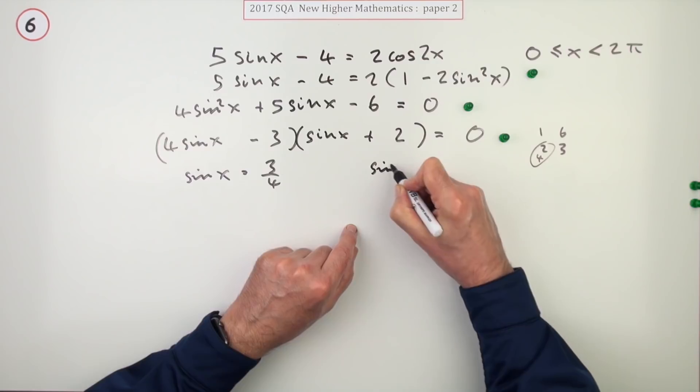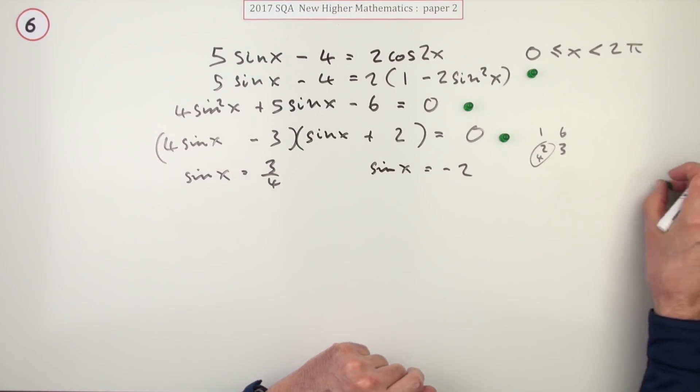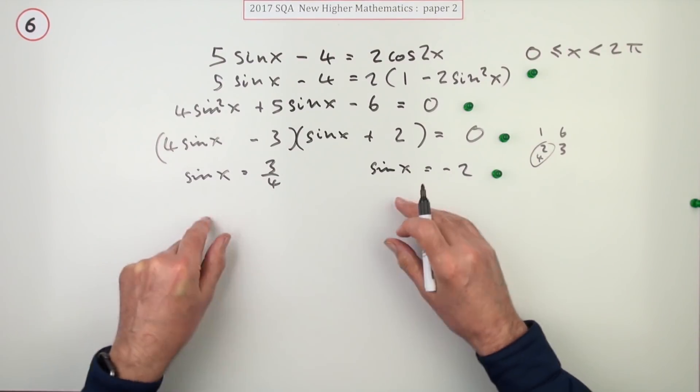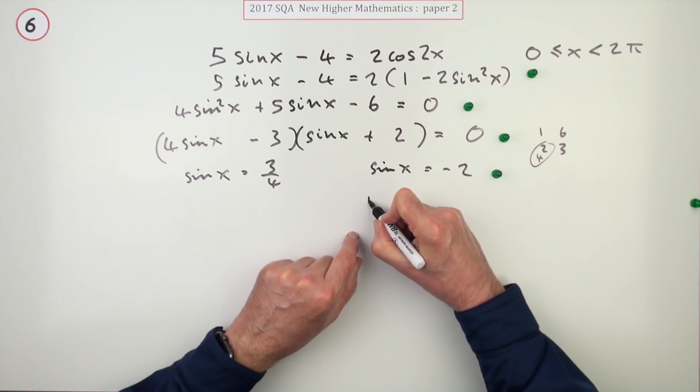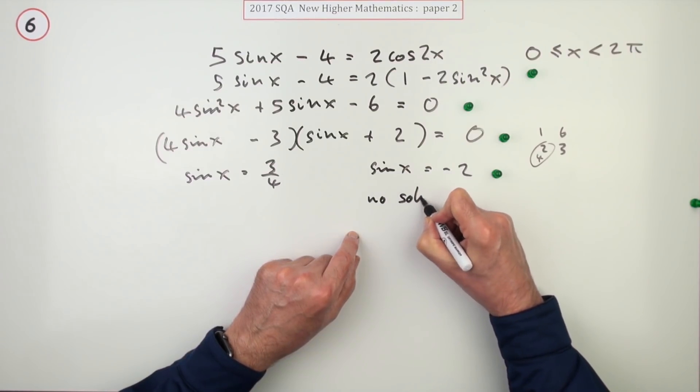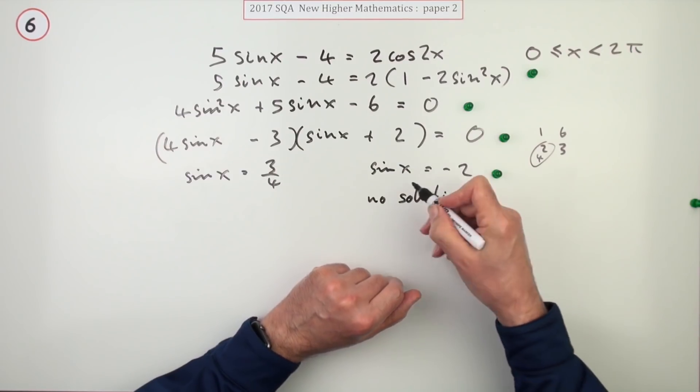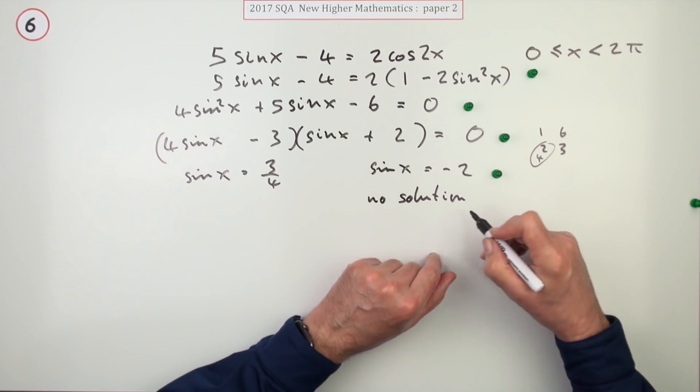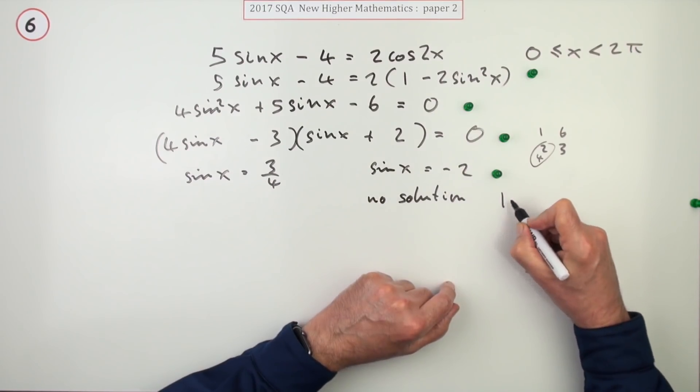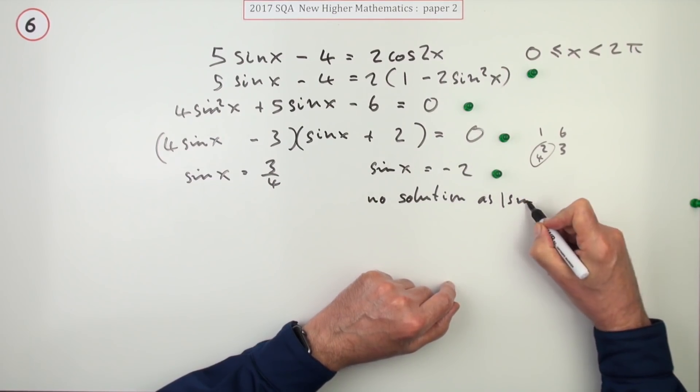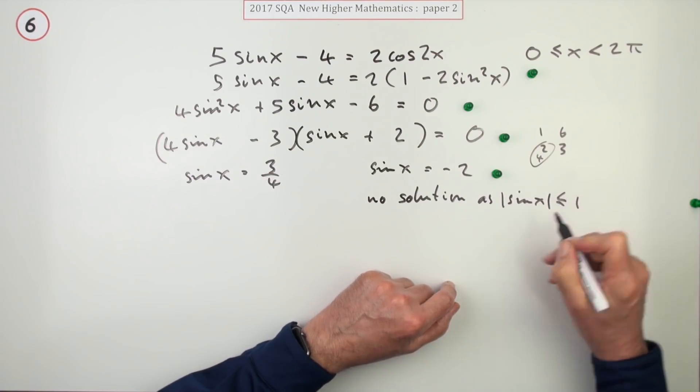Now it's just a case of getting the solutions. Well, this one's straightforward. For this part here, there's no solution. Give the reason. You don't need to, in the mark scheme they just accept a sort of score through, but the reason is sine of x can't exceed one or negative one. Or you could put it down this way: no solution as the absolute value of the sine of x has to be less than or equal to one.